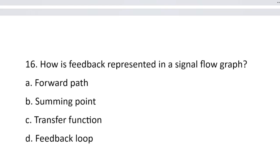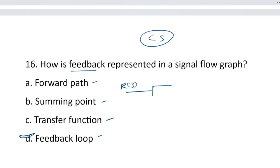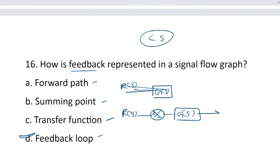Question number 16. How is feedback represented in a signal flow graph? Option A, forward path. Option B, summing point. Option C, transfer function. And option D, feedback loop. The correct answer is option D, feedback loop. In the signal flow graph: input R goes to a summing point (plus/minus), then through G to output C, with H as the feedback gain — this forms the feedback loop.